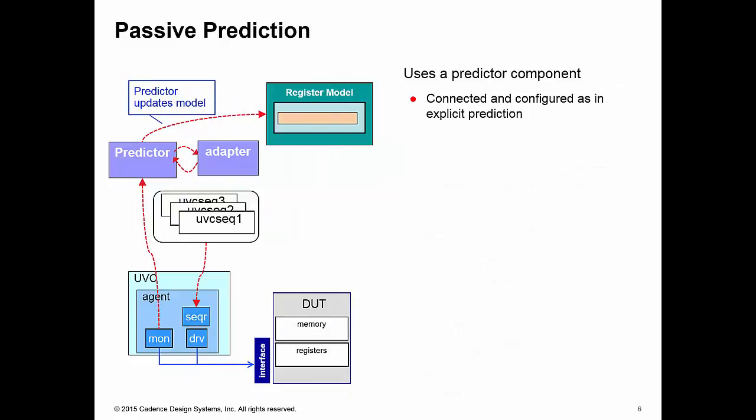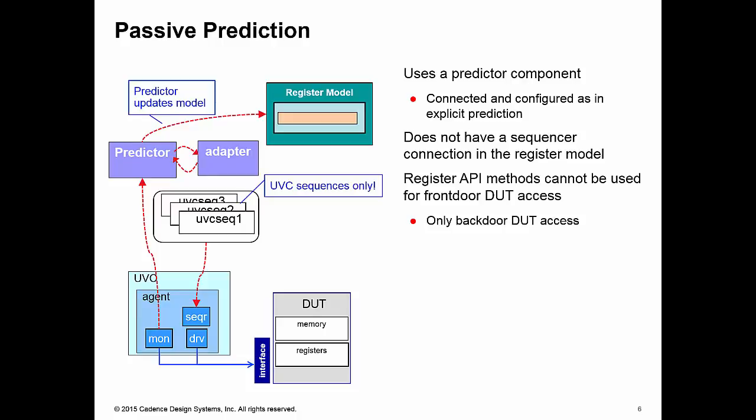Now, there's another prediction mode called passive prediction, which is very similar to explicit prediction. It uses a predictor component and it is connected and configured just as we used in explicit prediction. But in passive prediction, we do not have a connection between our register model and the UVC sequencer. What this means is that we cannot actually access the registers of our DUT via the register API methods like read or write.